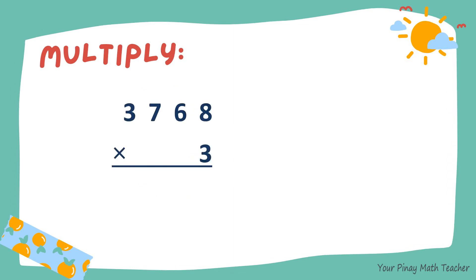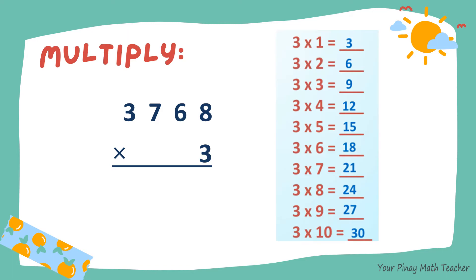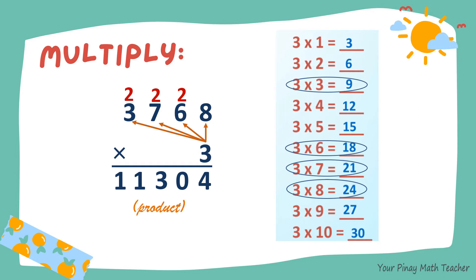Next, 3768 times 3. 3 times 8 is 24. So 4 carry 2. 3 times 6, 18. Plus 2, 20. So 0 carry 2. 3 times 7, 21. Plus 2, 23. So 3 carry 2. 3 times 3 is 9. Plus 2, 11. So the product is 11,304.